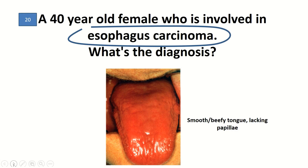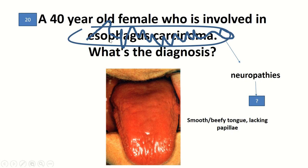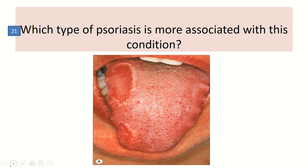A 40-year-old female with esophageal carcinoma: there is a smooth, beefy tongue lacking papillae. In conjunction with esophageal carcinoma, Plummer-Vinson syndrome is indicated. However, if the test maker emphasizes neuropathies instead of esophageal carcinoma, the diagnosis of vitamin B12 deficiency — pernicious anemia — is indicated. Both Plummer-Vinson and vitamin B12 deficiency could be considered depending on the history.